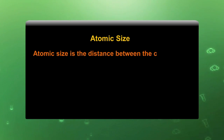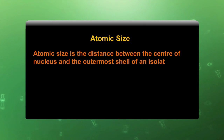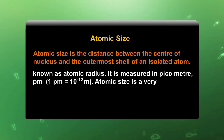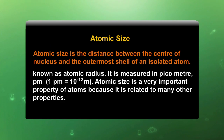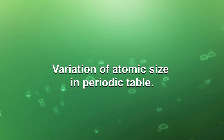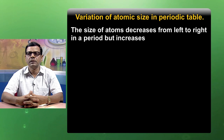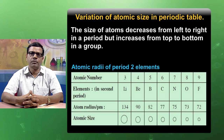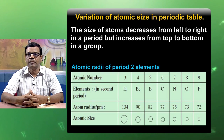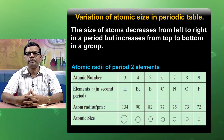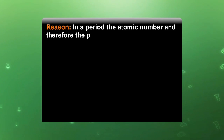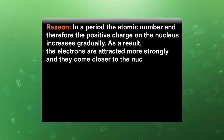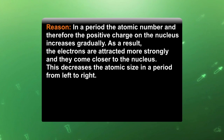Atomic size is the distance between the center of the nucleus and the outermost shell of an isolated atom. It is also known as atomic radius and is measured in picometers. Atomic size is a very important property of an atom because it relates to many other properties. Variation of atomic size in the periodic table: the size of an atom decreases from left to right in periods, but increases from top to bottom in a group. This table shows the variation of atomic size from left to right; the size of an element in a particular period decreases from left to right. The reason is that in a period, the atomic number and therefore the positive charge of the nucleus increases gradually, so the electrons are attracted more strongly and come closer to the nucleus, decreasing the atomic size from left to right.